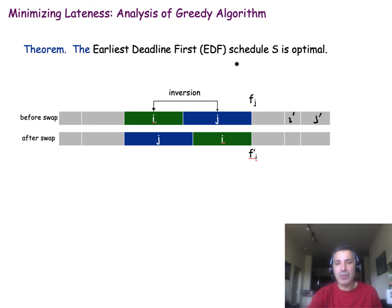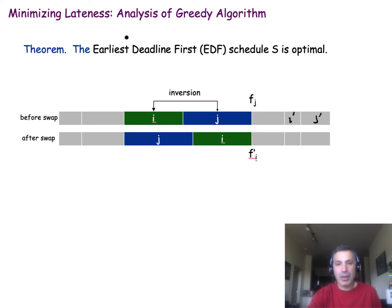But be careful: we only proved this for this specific formulation where the deadlines are soft and you are trying to minimize the maximum lateness. There are other formulations of the scheduling problem where the deadlines are hard, and in those cases the earliest deadline first algorithm is not always optimal. So be cautious about applying this theorem to different formulations.